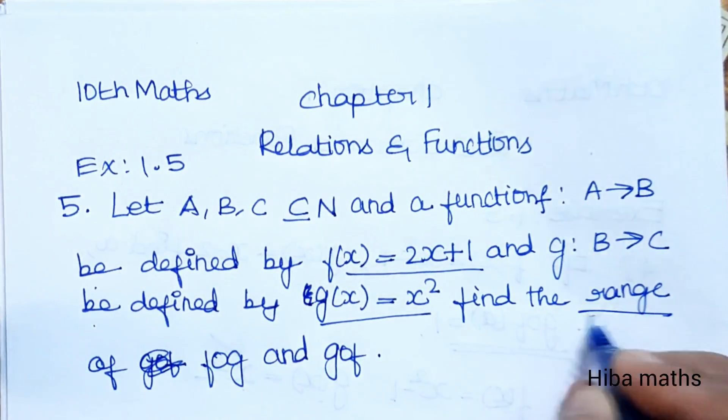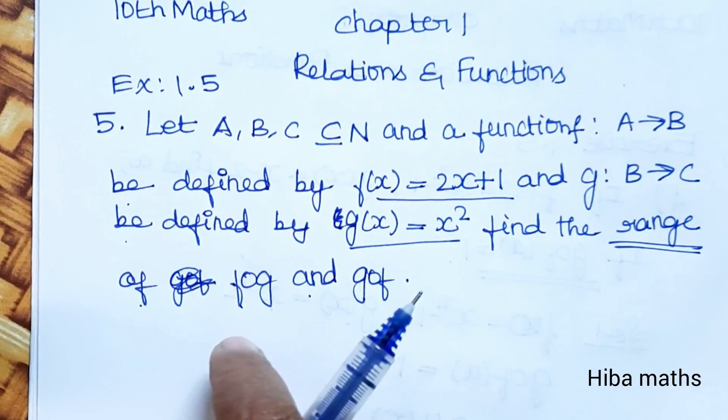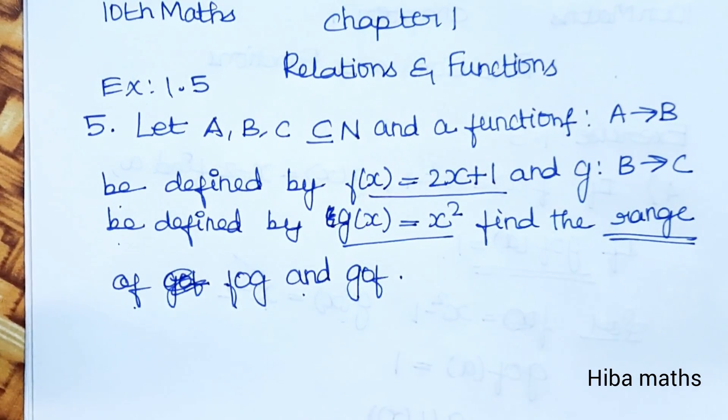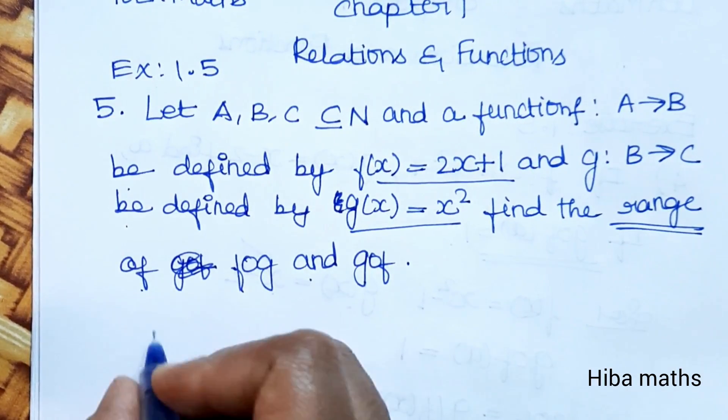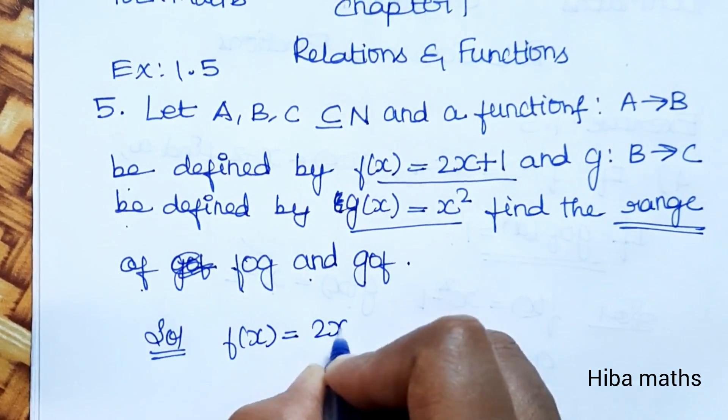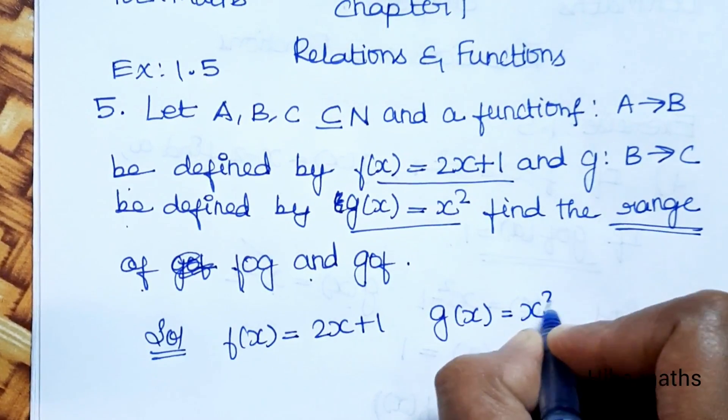Find the range of f∘g and g∘f. We have f(x) = 2x+1 and g(x) = x².